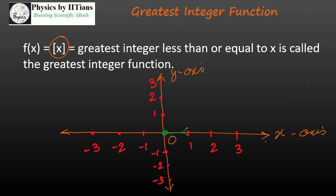So this is the graph for the greatest integer function. The dot indicates the greatest integer value of x at each interval. This is the basic concept behind the greatest integer function. Now let's discuss the fractional part of x. If you have a number x, it can be written as the integer part plus the fractional part. The fractional part gives whatever the decimal part you have, and it is written using small brackets.